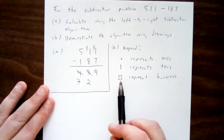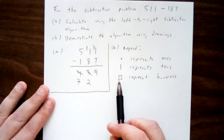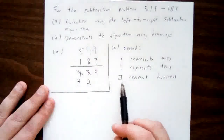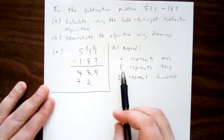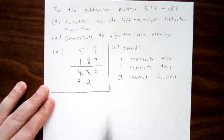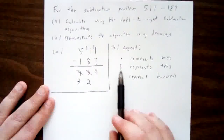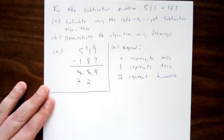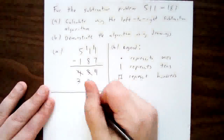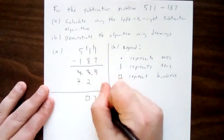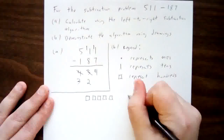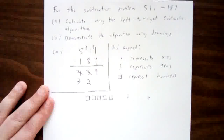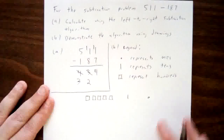When we're doing our subtracting, I can replace one of the squares with 10 of the sticks, or I could replace one of the sticks with 10 of the dots — because one of these is worth 10 of those, and so on. That's exactly what place value does for us. So I'll start with my initial problem, which is five hundreds, or five squares, and I have one 10 and one 1. So there's the 511 that I have to begin with.